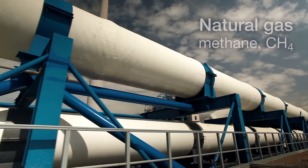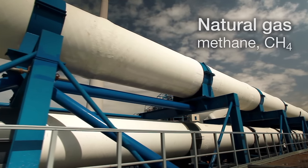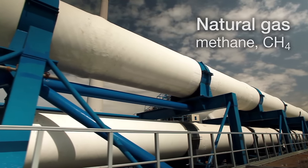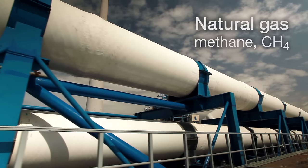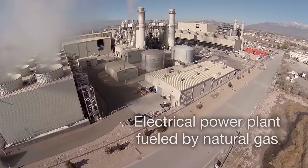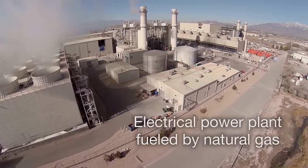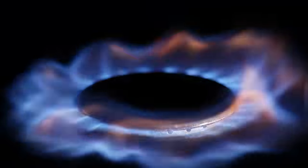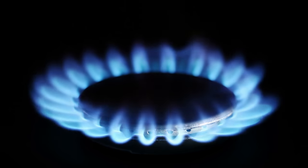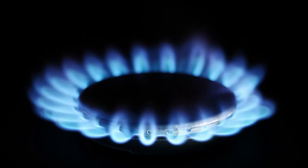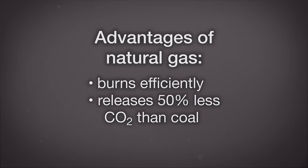Natural gas — the same thing as methane, CH₄ — has advantages that surpass even petroleum. It's relatively efficient for electricity production and very efficient for cooking and home heating. It has many fewer impurities than coal and oil, and in particular it emits 50% of the CO₂ that coal does, and about 20–25% less CO₂ than oil does, for the same amount of energy obtained.